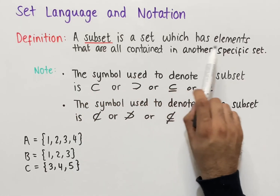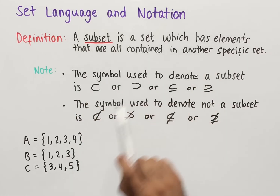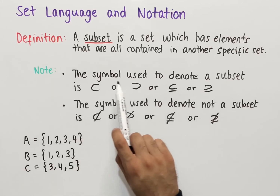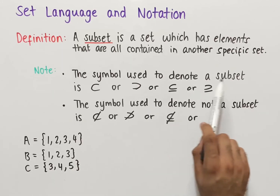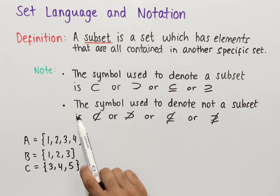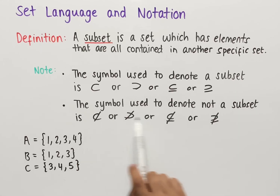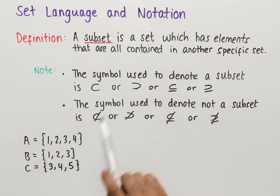A subset is a set whose elements are all contained in another specific set. The key symbols used to denote subsets are four symbols, and the key symbols used to denote 'not a subset' are another four symbols. Let's look at some examples of how to use these symbols.